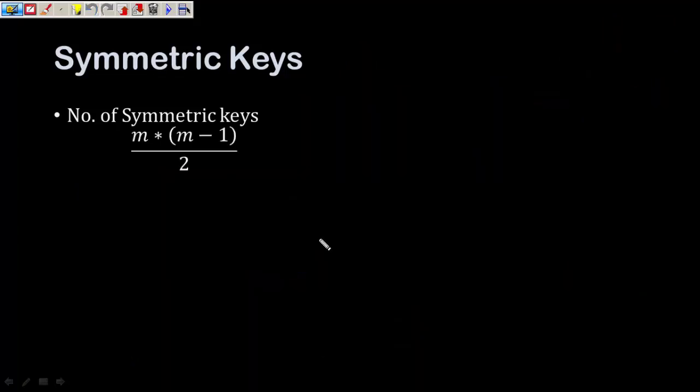So the formula for the calculation of the number of symmetric keys is m into m minus one by two, where m is the number of people who are communicating to each other.